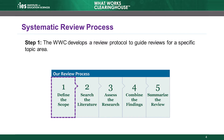The WWC systematic review process includes five steps: define the scope of the review, search the literature, assess the research, combine the findings, and, finally, summarize the review.